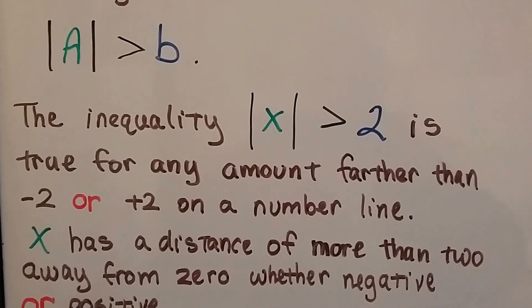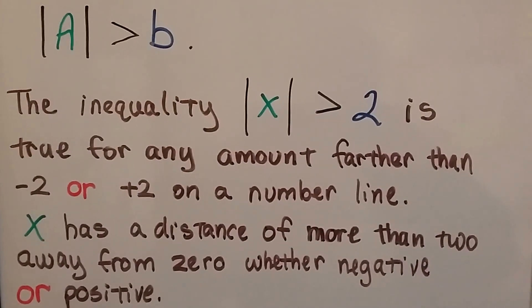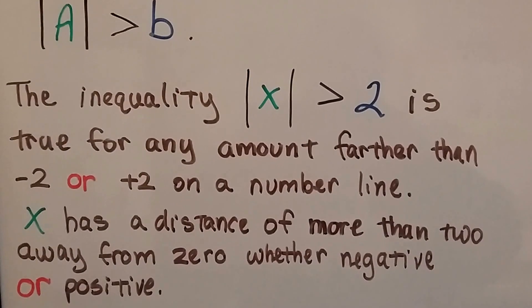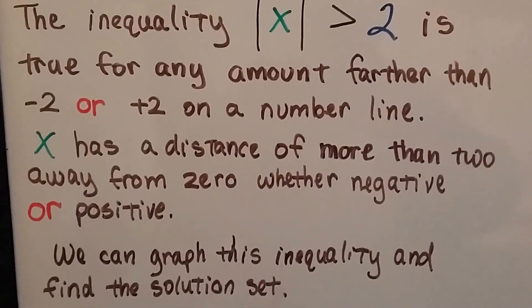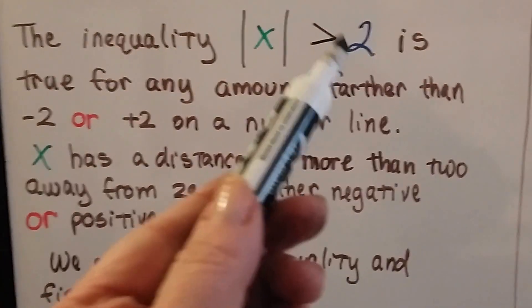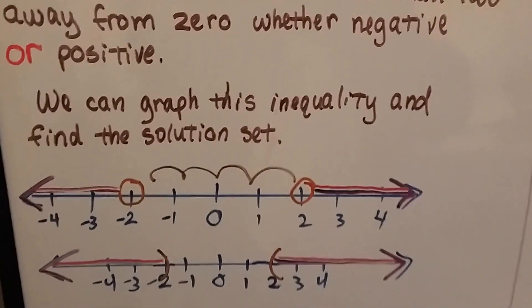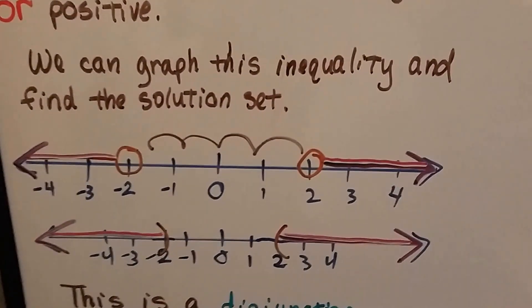The inequality, the absolute value of x is greater than 2, is true for any amount farther than negative 2 or positive 2 on the number line. The x has a distance of more than 2 away from 0, whether it's negative or positive. We can graph this inequality and find the solution set.